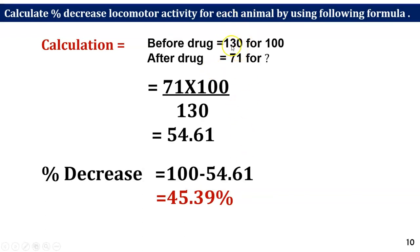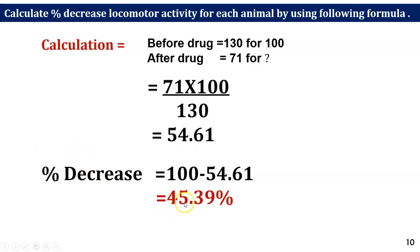To calculate the percent decrease: for animal number one, the locomotor count before drug was 130, and after drug the count decreased — diazepam is a CNS depression drug. We take 130 as 100% locomotor activity and cross-multiply to find what percent remains for the after-drug count. Cross-multiplying gives 54.61, and subtracting from 100 gives a 45.39% decrease in activity for one animal.